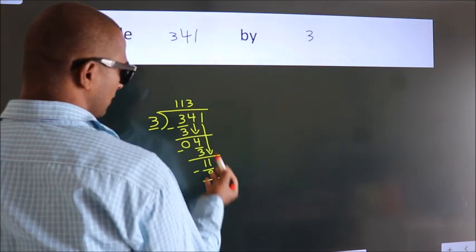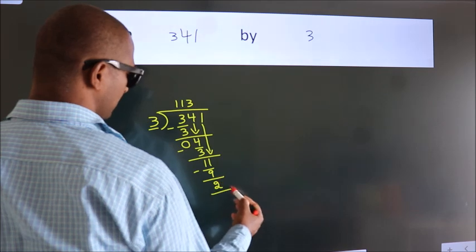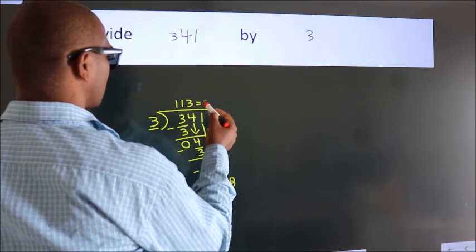After this, no more numbers to bring it down, so we stop here. This is our remainder. This is our quotient.